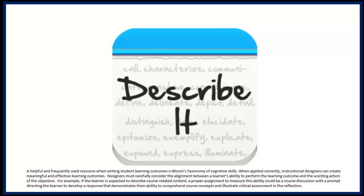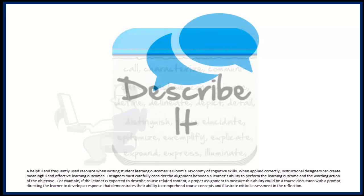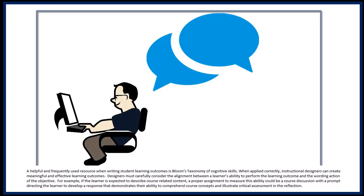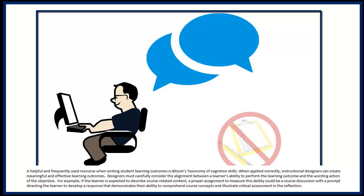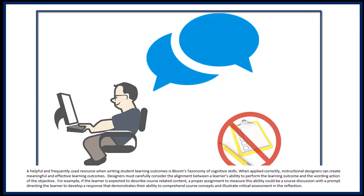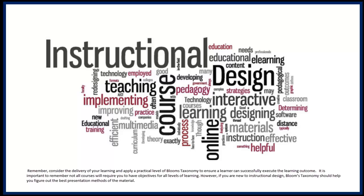For example, if the learner is expected to describe course-related content, a proper assignment to measure this ability could be a course discussion with a prompt directing the learner to develop a response that demonstrates their ability to comprehend course concepts and illustrate critical assessment in their reflection. Remember, consider the delivery of your learning and apply a practical level of Bloom's taxonomy to ensure a learner can successfully execute the learning outcome.